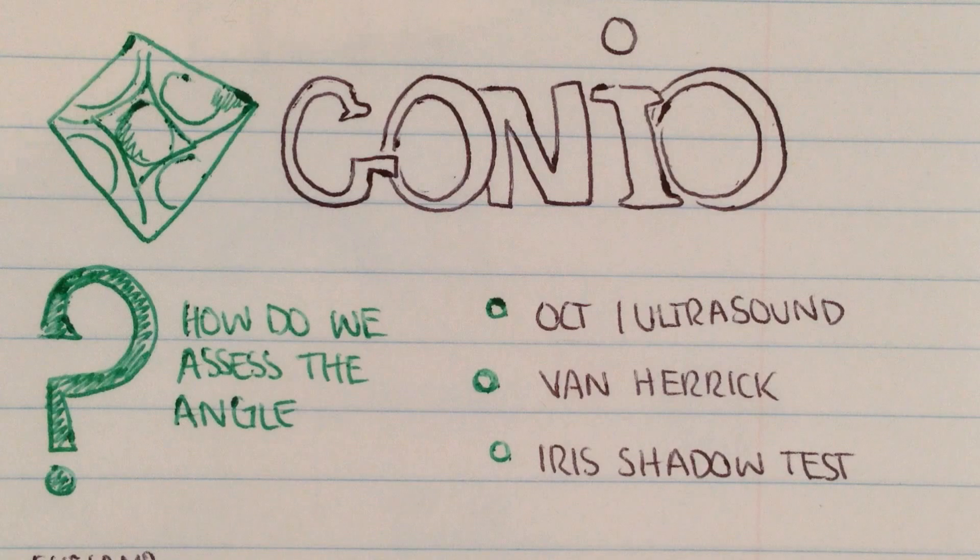Welcome to IC Optometry Talk. Today we're going to be talking about gonioscopy, which is simply a procedure used to assess the anterior chamber and its anatomical structures.